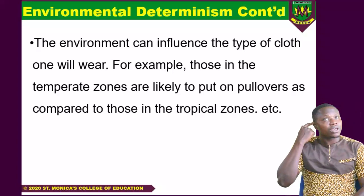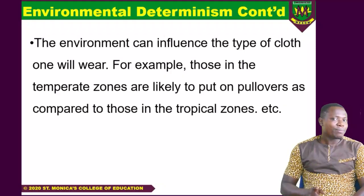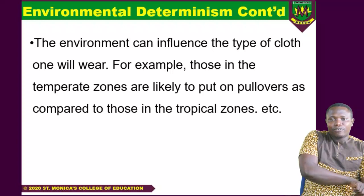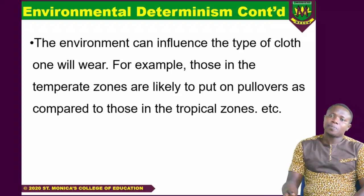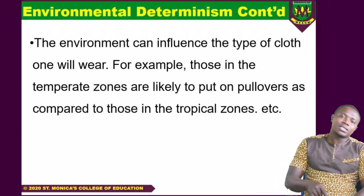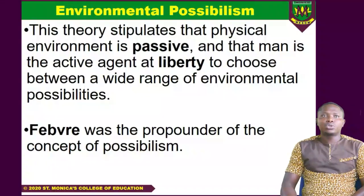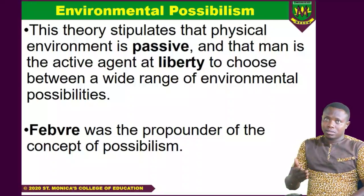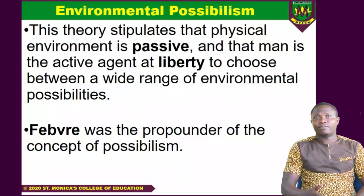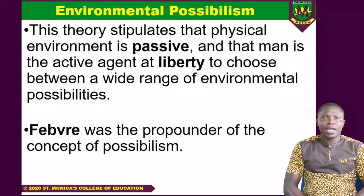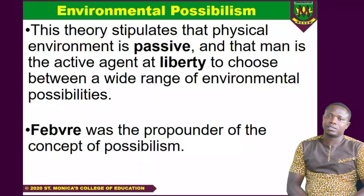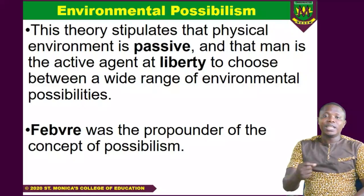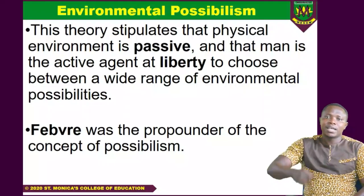Then we have another theory called environmental possibilism. Remember that the environmental determinism proponents believe that the environment influences you, but the environmental possibilism people are saying that you, the human being, can influence the environment. According to this theory, the physical environment is passive, and man is the active agent at liberty to choose between a wide range of environmental possibilities.